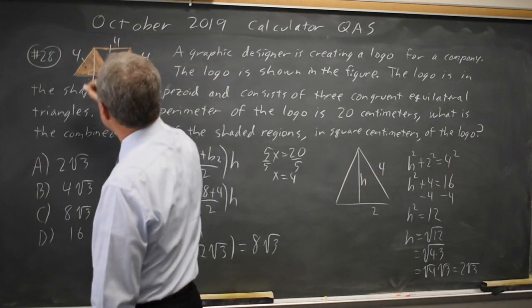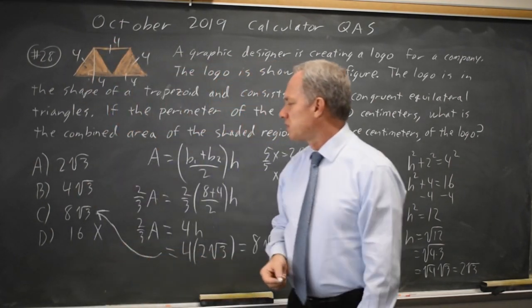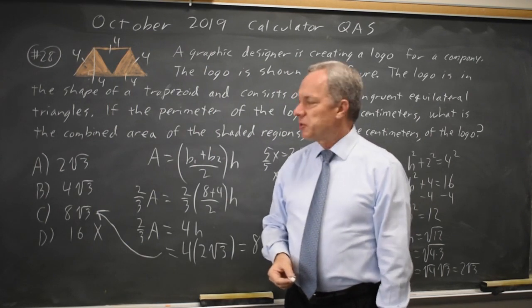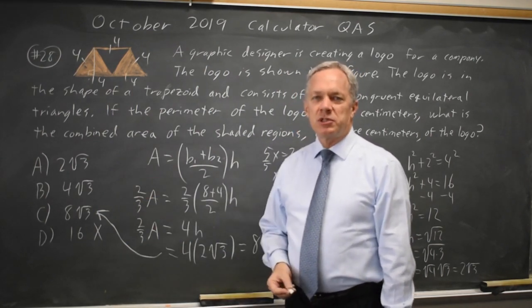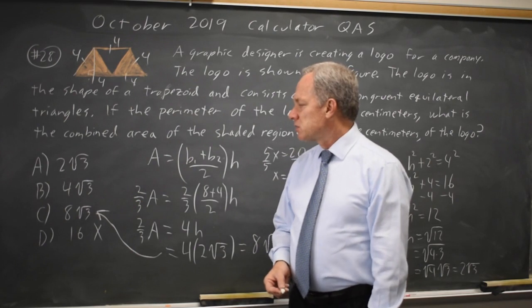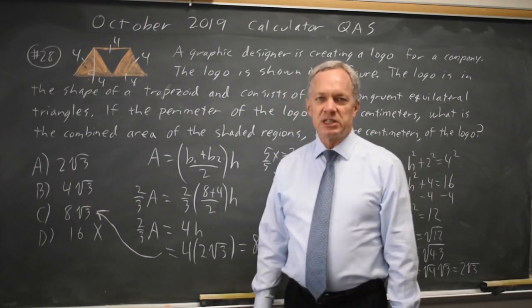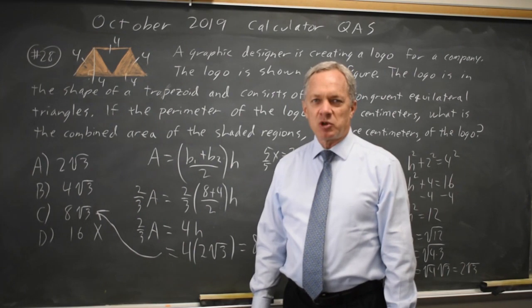But the height is actually pretty close to 4 if you look at this picture. The height here is not much less than 4, so the answer is not going to be 4 root 3, which is way less than 16. So that would suggest by estimation that the answer is probably C.